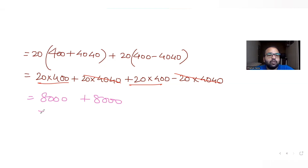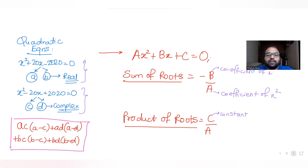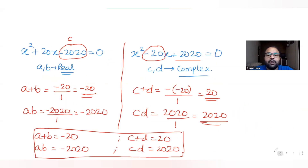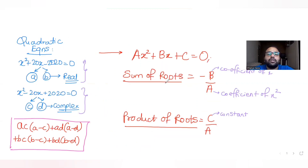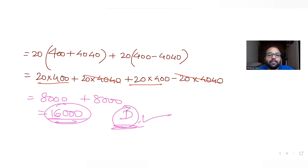So the answer for the expression is 16,000. The key idea used was that for a quadratic equation, sum of roots is -b/a and product of roots is c/a. The correct answer option matches 16,000. I hope you understood how to solve this question — I'll meet you again tomorrow with the next question. Please subscribe, like, and share these videos with your family and friends. Thank you!